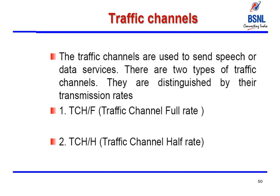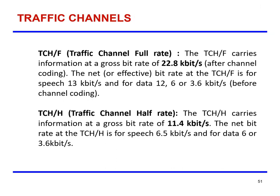Traffic channels carry speech or data services and come in two types distinguished by transmission rate. The full-rate traffic channel (TCH/F) carries information at a gross bit rate of 22.8 kbps; the net bit rate is 13 kbps for speech and 12, 6, or 3.6 kbps for data before channel coding. The half-rate traffic channel (TCH/H) carries information at 11.4 kbps gross; the net bit rate is 6.5 kbps for speech and 6 or 3.6 kbps for data.